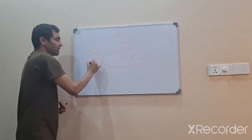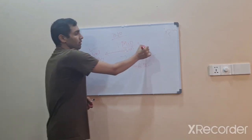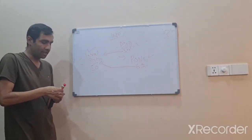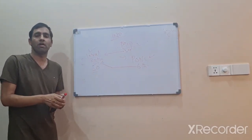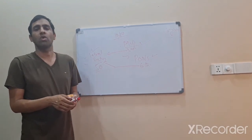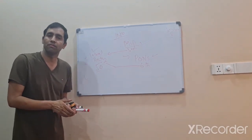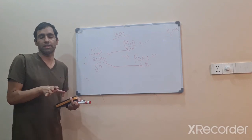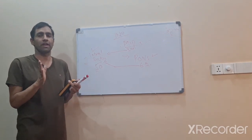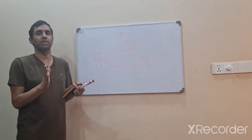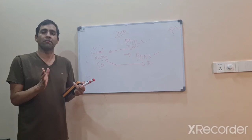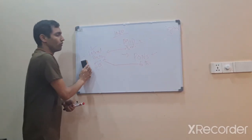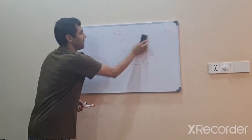These two different nerves innervate two different muscles and originate from two different locations, yet they perform a conjugate, coordinated movement. This is possible because of a connection between these two nerves called the medial longitudinal fasciculus. Let's use an example to understand this.